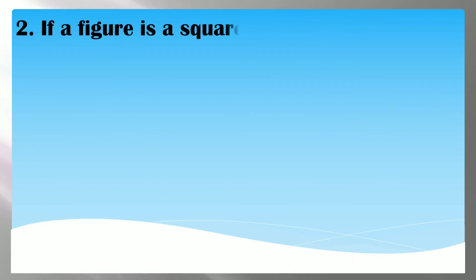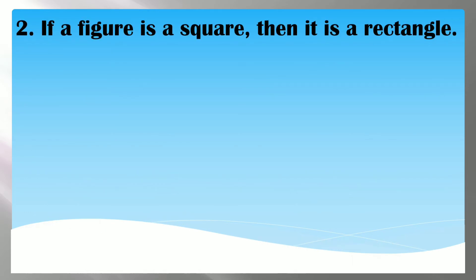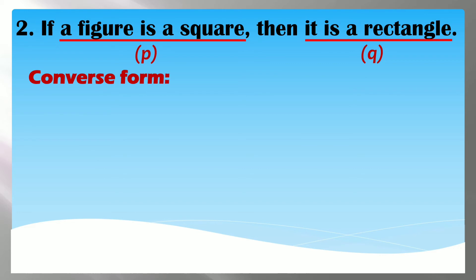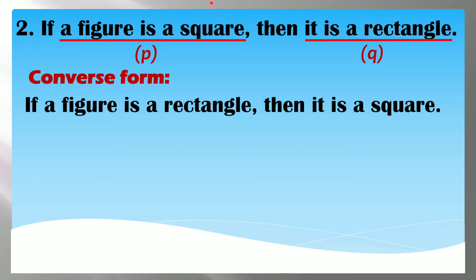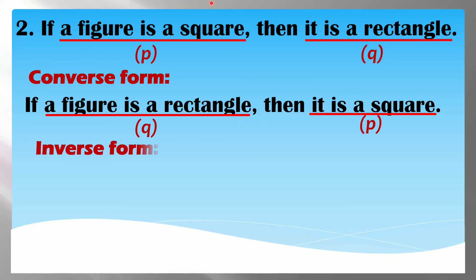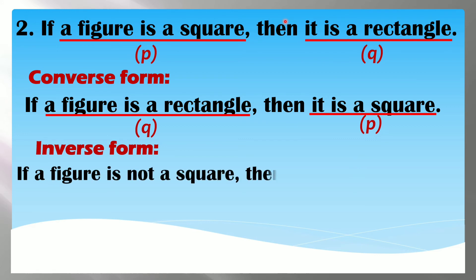Let's have number 2: if a figure is a square, then it is a rectangle. Ito yung ating hypothesis at ito yung ating conclusion. So gagawin natin siyang converse — pagbabaliktarin natin. Magiging: if a figure is a rectangle, then it is a square. Nauna si Q bago si P. And then kapag inverse, maglalagay lang tayo ng 'not' sa ating if-then form: if a figure is not a square, then it is not a rectangle — not P, not Q.